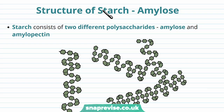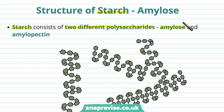So let's talk about what starch is actually made of. We know it's a polysaccharide, but it's made of different components. Starch is made of two different polysaccharides called amylose and amylopectin. They're very similar, but there are important differences.